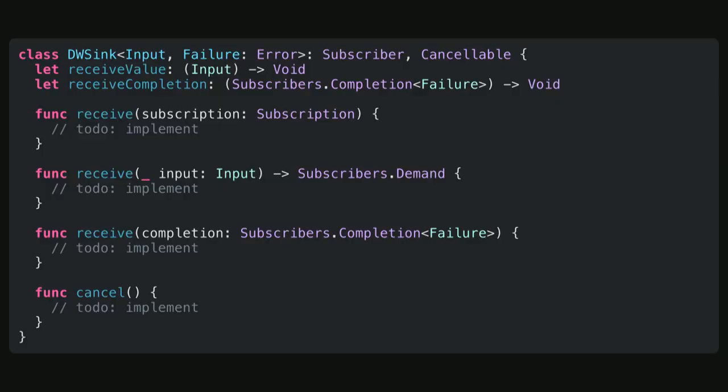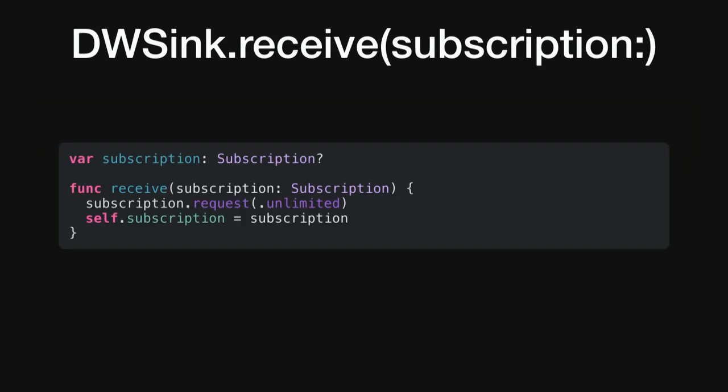Let's look at how to implement these. We define our custom DWSink — I've omitted the initializer, but you can imagine it takes the receiveCompletion and receiveValue closures. The first receive method is called whenever we receive a subscription. Because we're not sure if a publisher holds on to its subscription, we also need to hold on to it, so I added an instance variable to the DWSink to store it. Then we request an unlimited amount of items from this subscription.